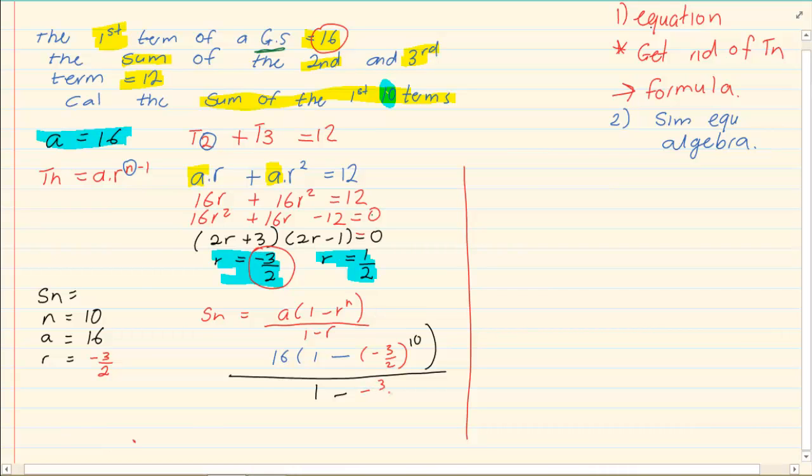All over one minus, and then remember the r is minus three over two. So you must remember that you have a minus and minus next to each other, which makes it a plus. Then you're going to put it into your calculator. Your final answer is going to be minus 362 comma 66.